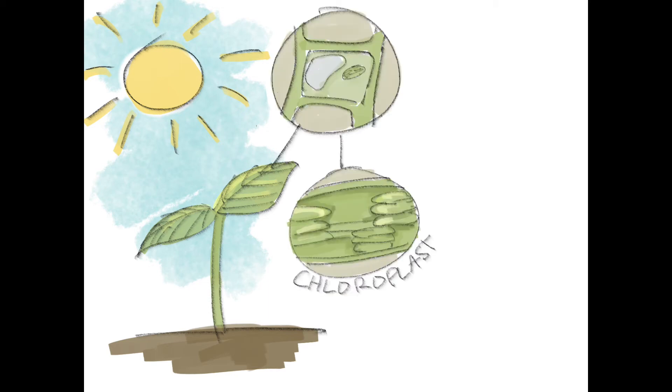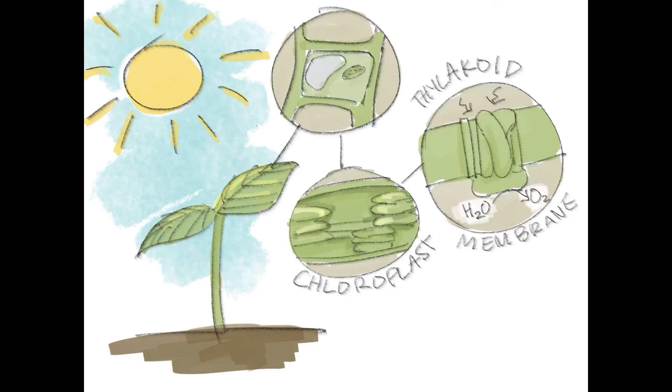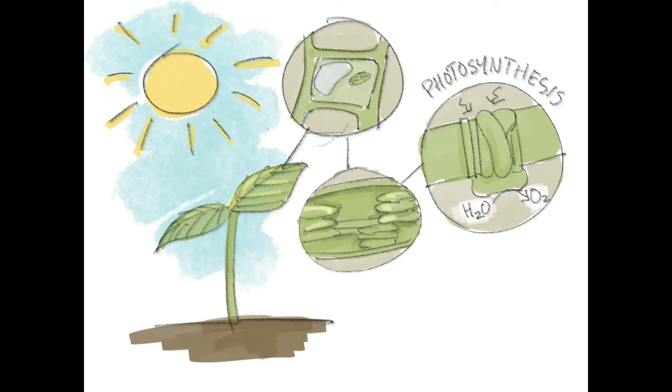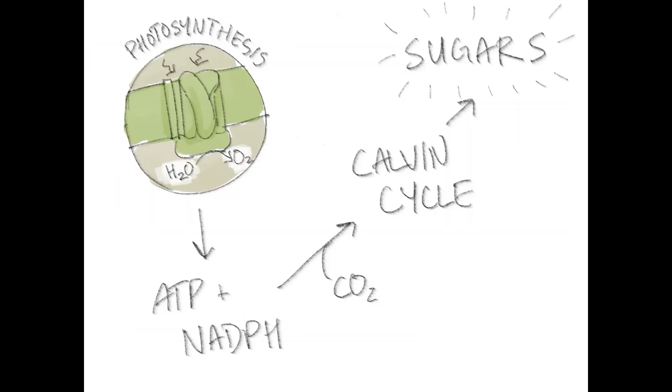Our story is set in the thylakoid membrane of chloroplasts, where photosynthesis takes place. If you've been sleeping in your biology classes, photosynthesis is the process of harvesting light energy and reducing power from water into reduced electron carriers and ATP, which is needed for the fixation of inorganic carbon into glucose.